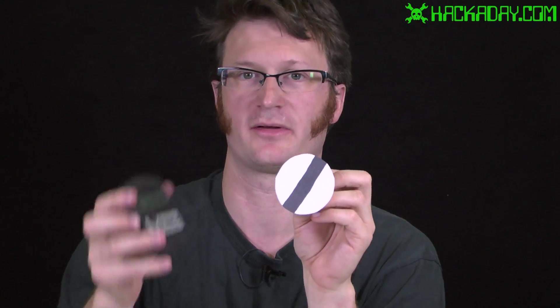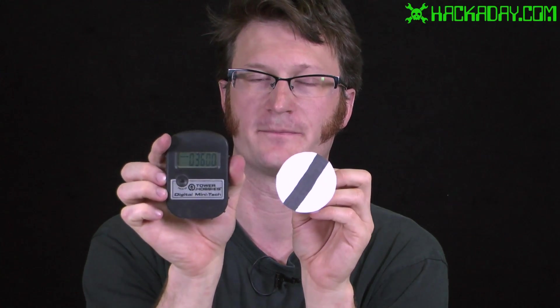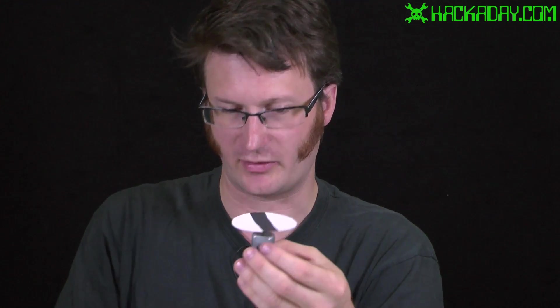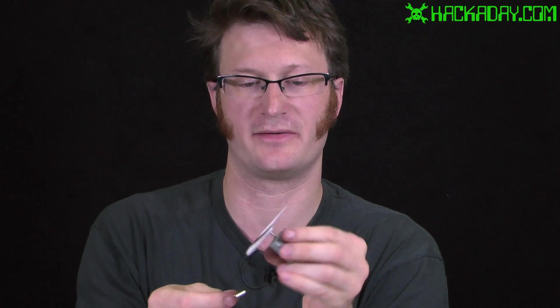I have the motors here with the paper disc on it and these are simulating model airplane propellers. I have a tachometer here that I will point at this and it'll tell me my RPMs. So I'm going to connect this up. This is my normal motor unmodified and I am reading this as about 2100 RPM.